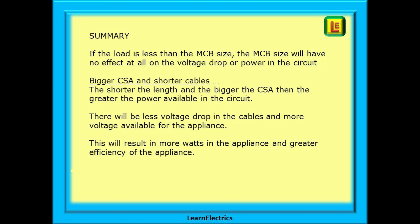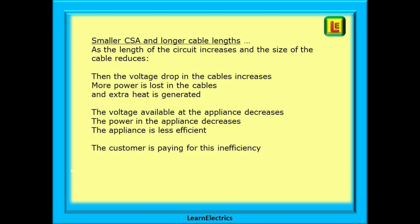A short summary of key considerations: if the load is less than the MCB rating, the MCB size has no effect on voltage drop or power in the circuit — we included it deliberately to show this. The shorter the cable length and the bigger the CSA, the greater the power available, with less voltage drop in cables and more voltage for the appliance — resulting in more watts and greater efficiency. As circuit length increases and cable size reduces, voltage drop increases, more power is lost as heat in the cables, and both voltage and power at the appliance decrease.